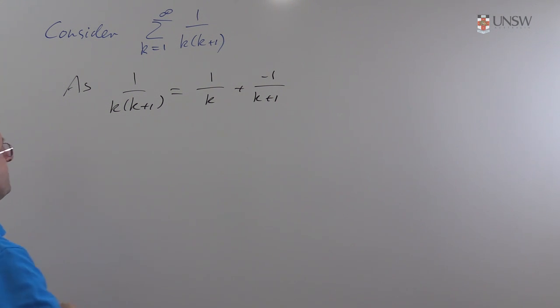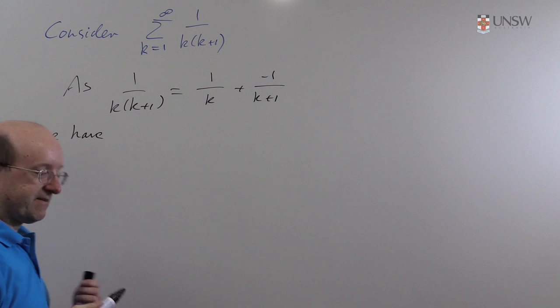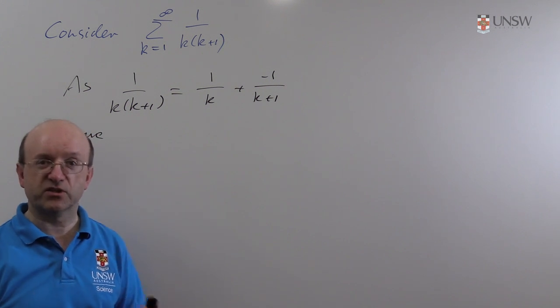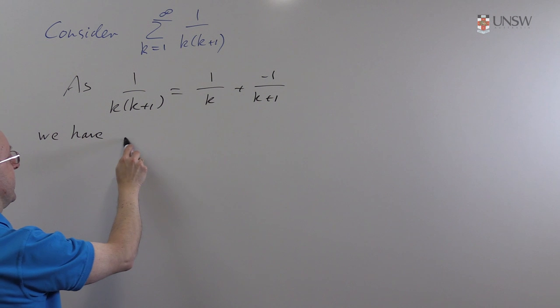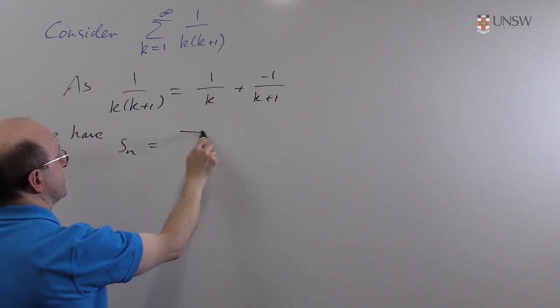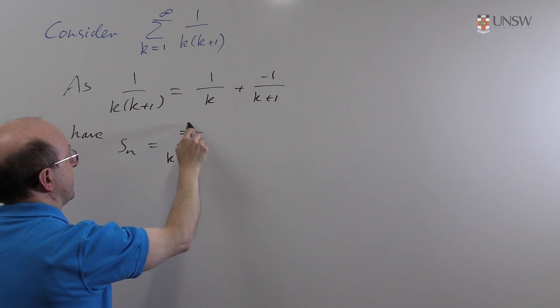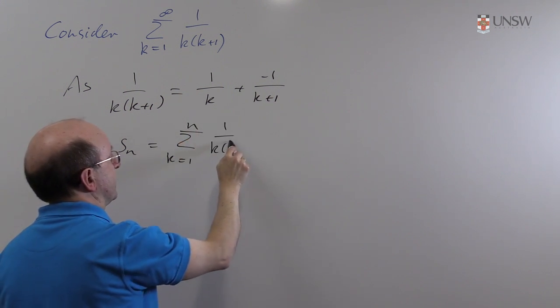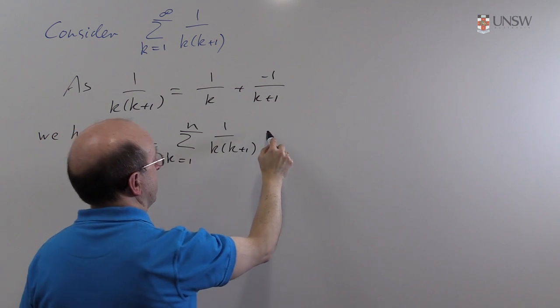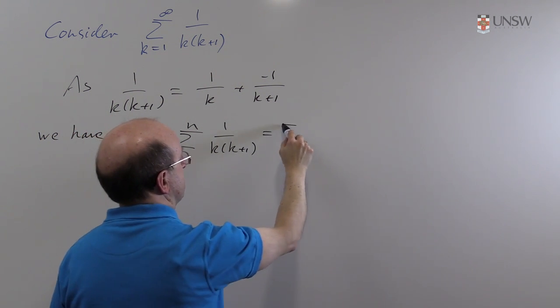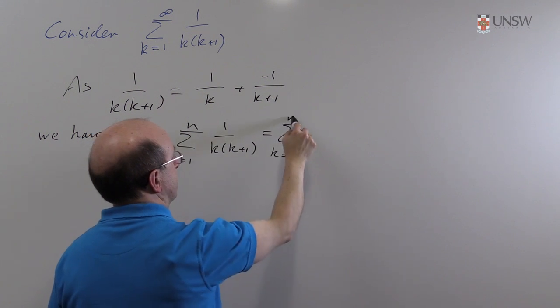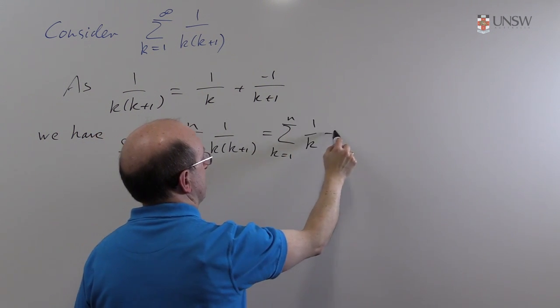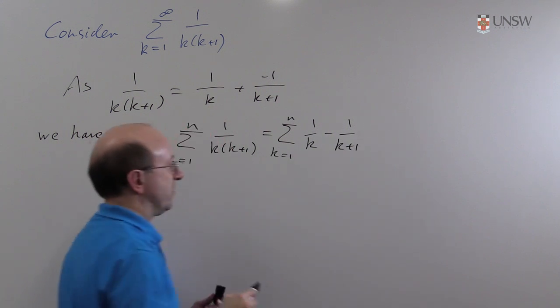So given that that's true, what we want to do is construct the thing known as the partial sum. By definition the limit of a series is the limit of the sequence of partial sums. So the partial sum Sn, the sum from k equals 1 to n, 1 over k times k plus 1